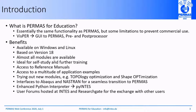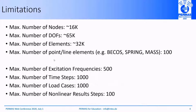There are some limitations to prevent commercial use. The maximum number of nodes is limited to 16,000. The maximum number of degrees of freedom is approximately 65,000. The maximum number of elements is 32,000. The maximum number of point and line elements — for example beams, spring elements, mass elements — is restricted to 100. The maximum number of excitation frequencies is 500. The maximum number of time steps is 1,000. The maximum number of load cases is 1,000, and the maximum number of non-linear result steps is also 100.